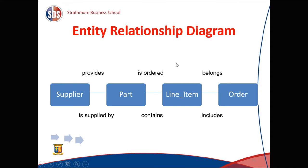To establish relationships between those smaller tables, we need an entity relationship diagram. For example, a supplier provides parts, a part is ordered in a line item, a line item belongs to an order. The relationship could be one-to-many — a supplier could supply many different parts, and an order could have many different line items.